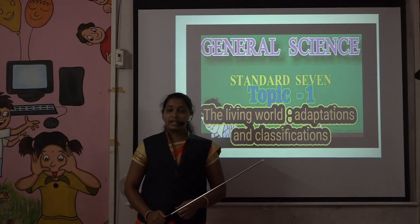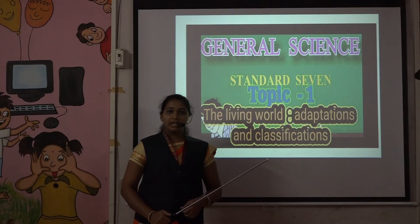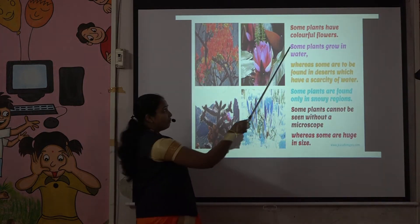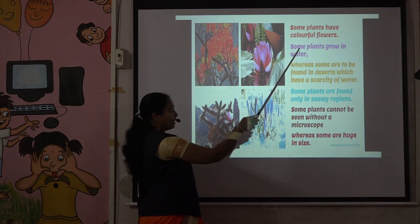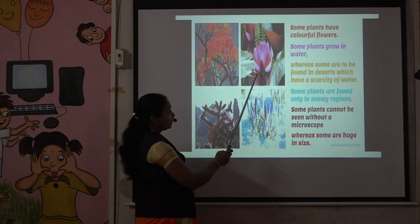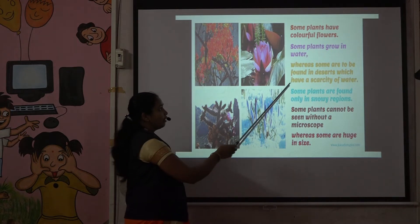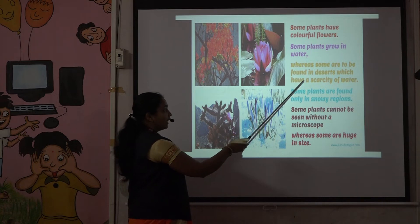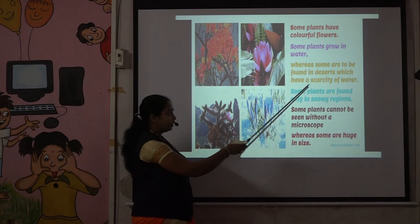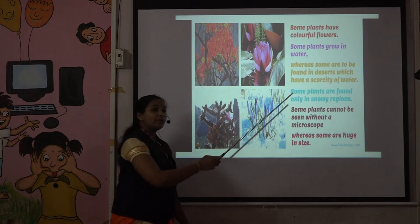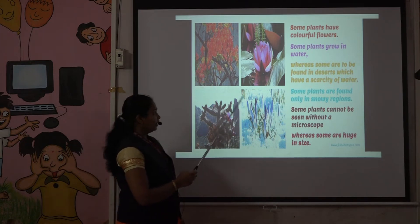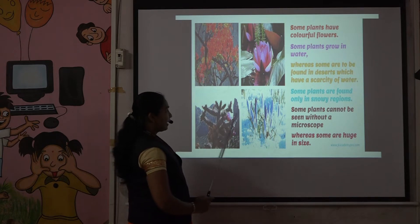We know that different types of plants and animals live on the earth. Some plants have colourful flowers, some plants grow in water — for example, the lotus shown in the picture — whereas some are found in deserts which have scarcity of water, meaning very little water is present. Here, the cactus is shown.